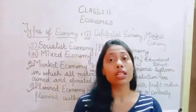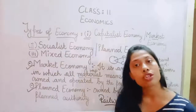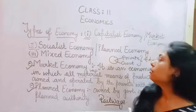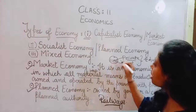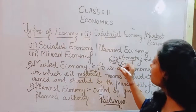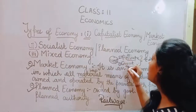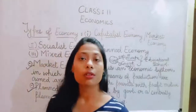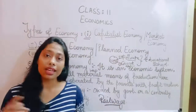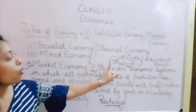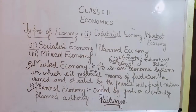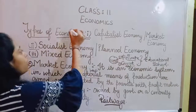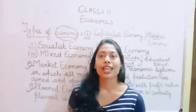There are also joint ventures where the private and government sectors hold shares together. For example, the total may be 100%, with 50% held by the private sector and 50% by the government, or any other ratio. If the private and the public sector are combining and working together, we categorize them under mixed economy. So these were your three types of economies which you need to learn in order to understand the overall economy. Thank you so much.